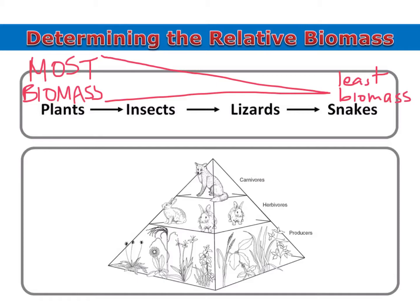This can also be illustrated using an ecological pyramid — a biomass pyramid. You can see here that the producers have the most, which is why they're on the bottom, the widest part, and the carnivores would have the least biomass.